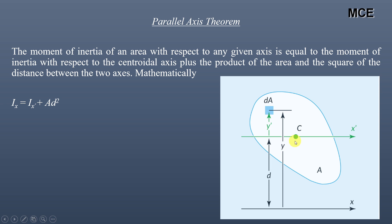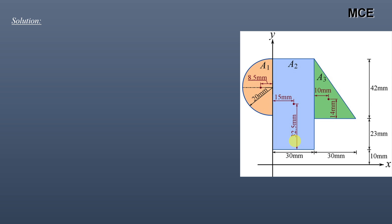For our problem we can divide this irregular shape into three parts: the first one is the semicircle, the second one is the rectangle, and the third one is the triangle. The centroid of the semicircle is 8.5 mm from the y-axis. The centroid of the rectangle is 32.5 mm plus 10 mm from the x-axis and 15 mm from the y-axis. The centroid of the triangle is h/3 from the base: 42÷3 = 14 mm from the base, and 30÷3 = 10 mm from the edge of the rectangle.